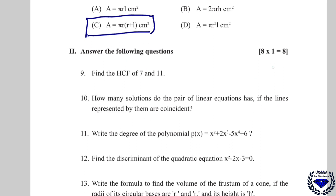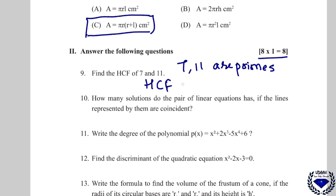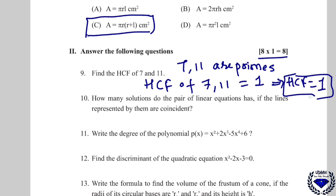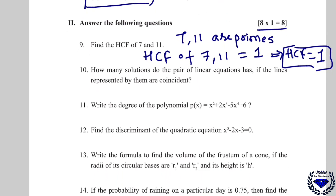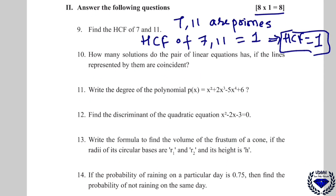Now moving to the one-liner questions. Find the HCF of 7 and 11. Since 7 and 11 are prime numbers and co-primes, there is no common factor between them, so HCF of 7 and 11 = 1.